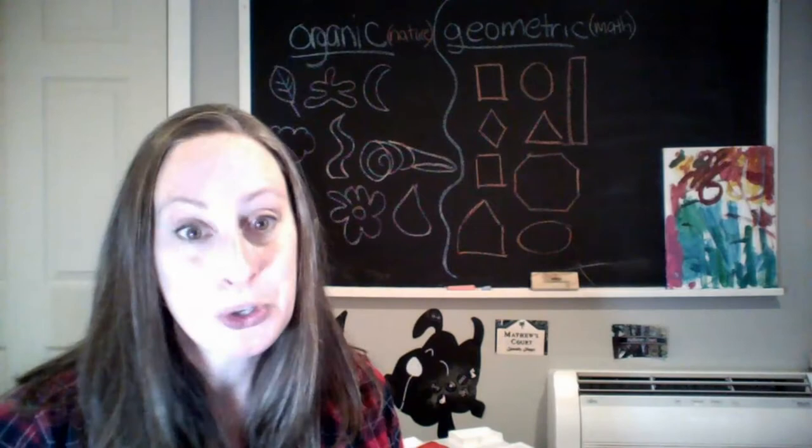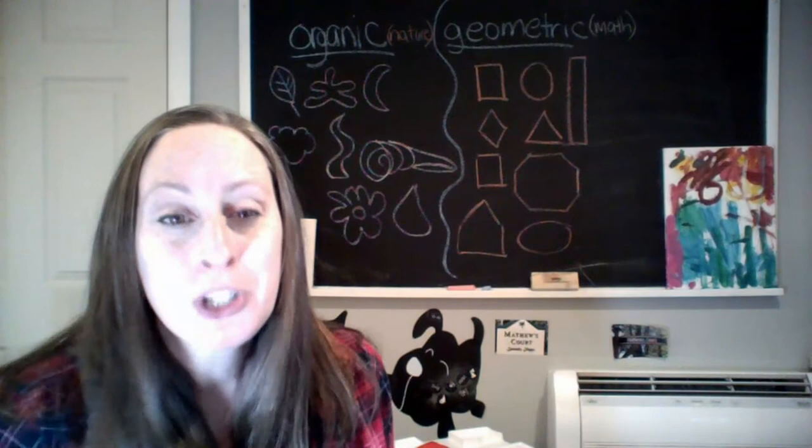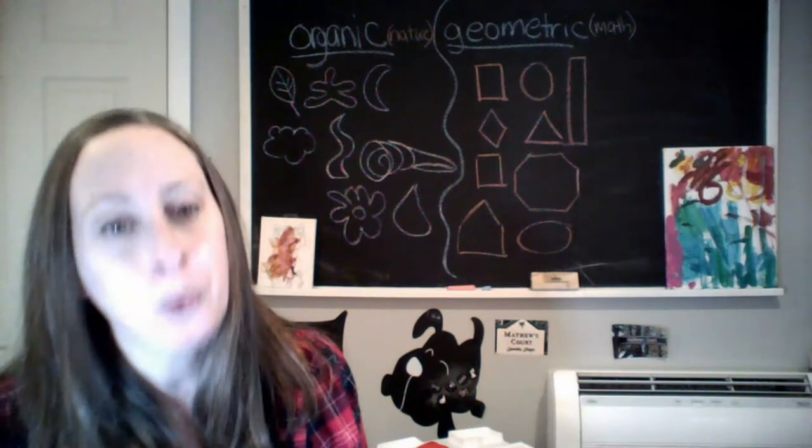Organic shapes include leaves, clouds, seaweed, shells, rocks, and the sun. Geometric shapes are the ones we talked about a lot in kindergarten — those are our basic shapes, or shapes that we learn about in math: squares, triangles, circles, octagons, pentagons, etc.